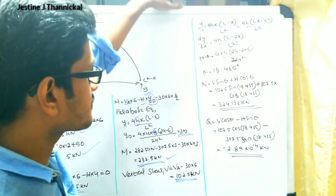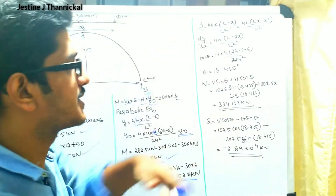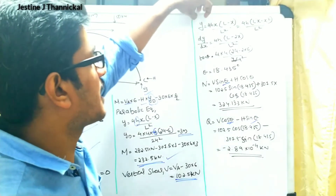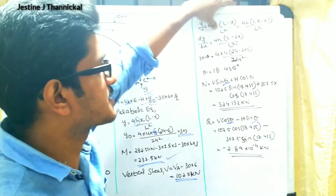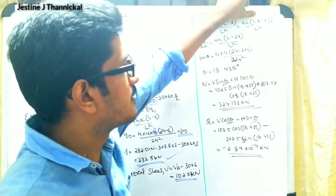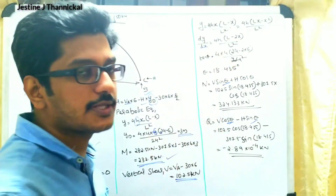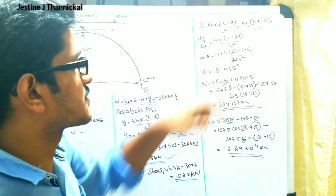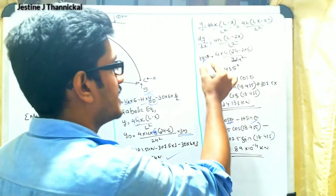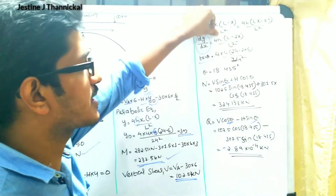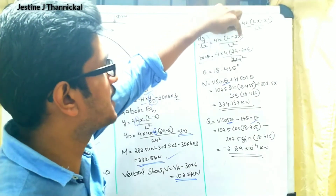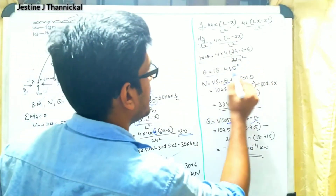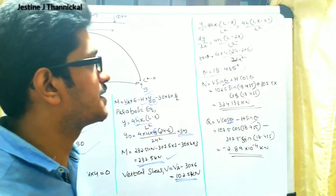To find the normal thrust and radial shear, we need the angle theta at point D. Using the parabolic equation, differentiating y with respect to x gives dy/dx equals 4h(L minus 2x) divided by L squared. Substituting h equals 4, L equals 24, and x equals 6, we compute tan(theta) and get theta equals 18.435 degrees.